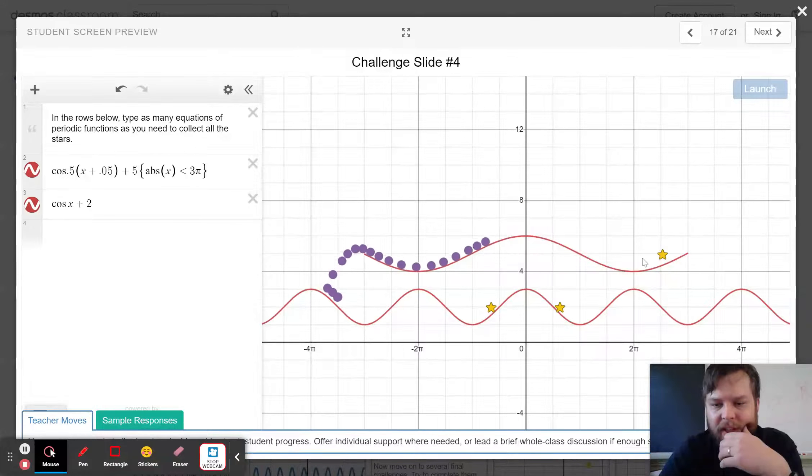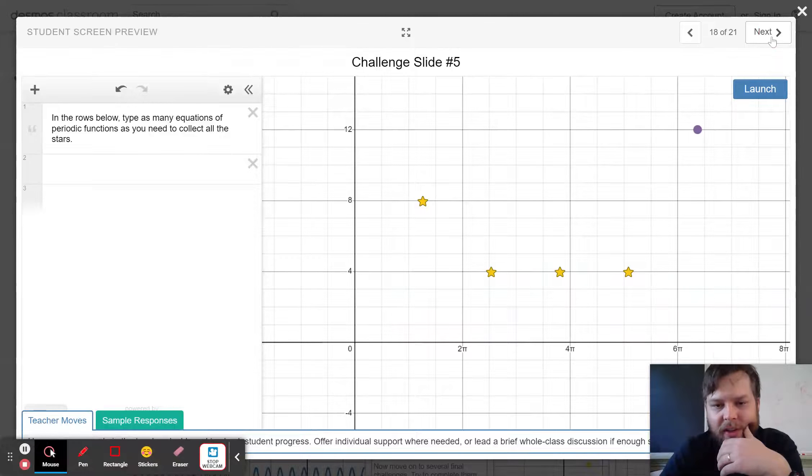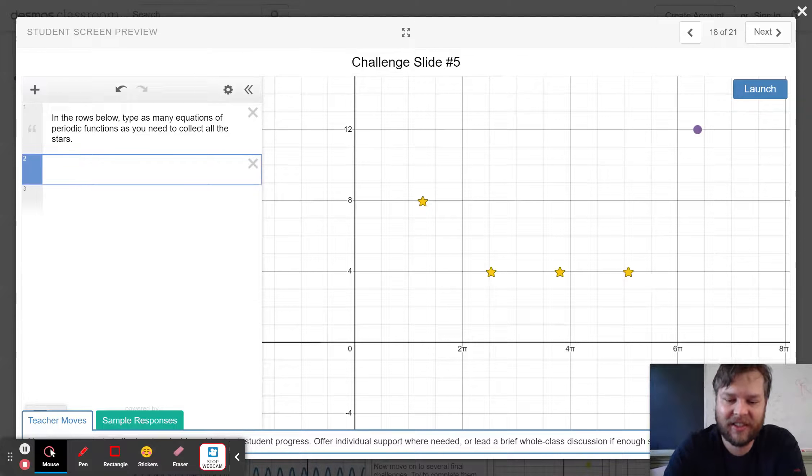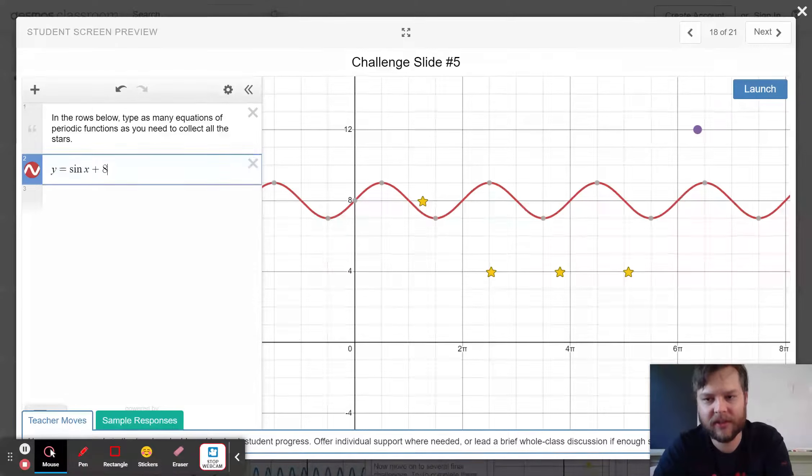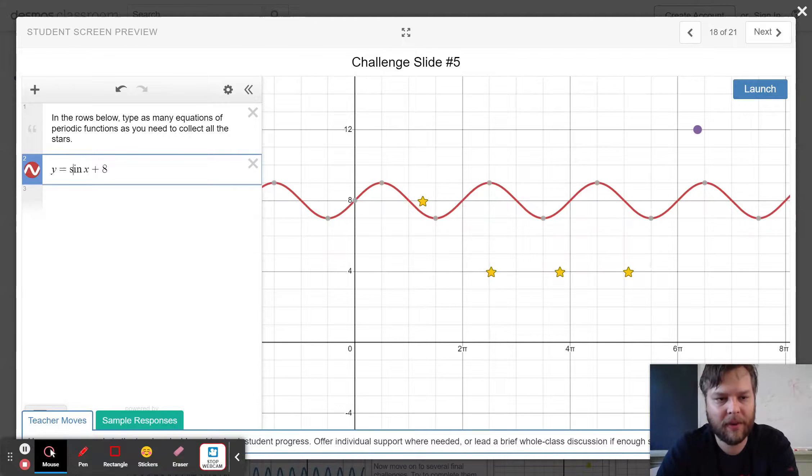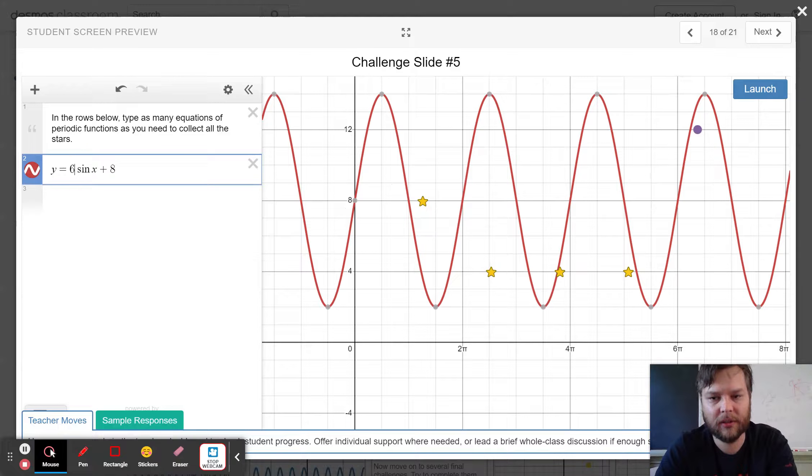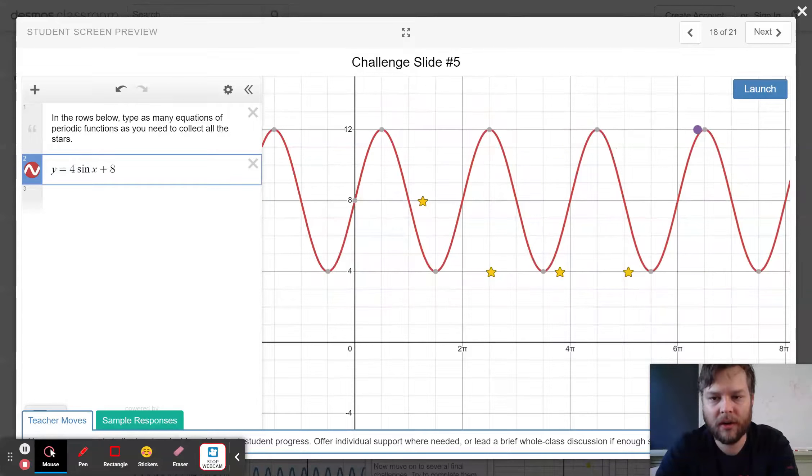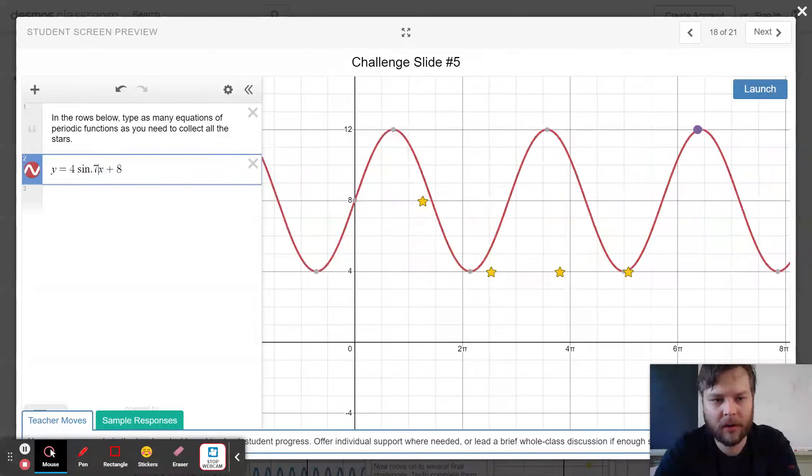I think I might be stumped on this one on how to get it to split down the middle. But I like my idea anyway. I'm going to leave it. Let's see if I can get one more. And then we'll call it a day. Let's say I had y equals sine x plus 8. Let's make that bigger. Let's try times 4. And make it a little bit wider. Yeah, that's not going to work.